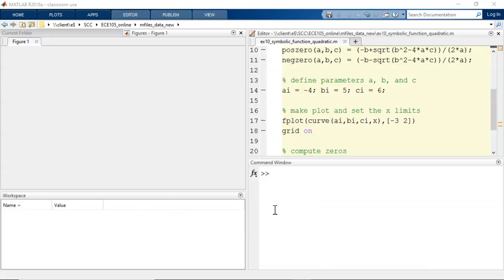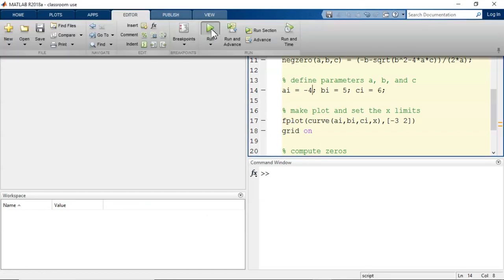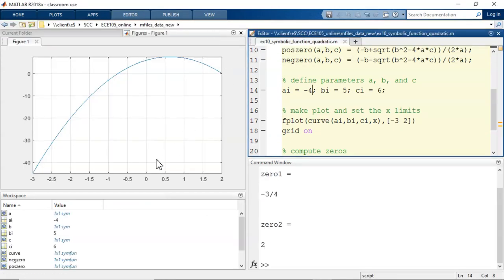Let's look at the same example within MATLAB. I'll run it with the same input parameters as before. Now, on the plot with the grid added, we can see that the curve crosses the x-axis at x equals negative 3 fourths and x equals 2.